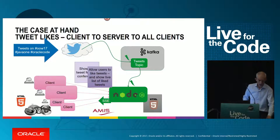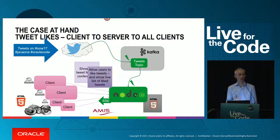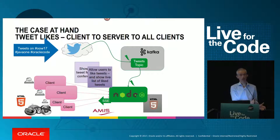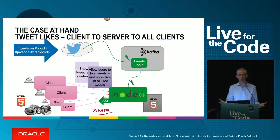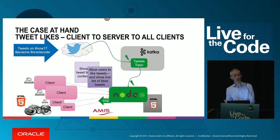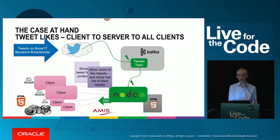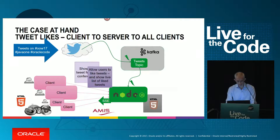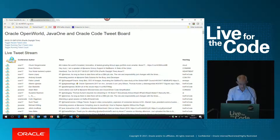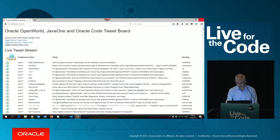But wait, there is more. I want users of this active UI to be able to like tweets, and when they do, all other users should be informed. This is just one example of any situation where actions in one client should be replicated to other clients — the typical example is a chat application, but there are many more: presence information, 'I've now started working on order such-and-such' — broadcast that information to all other clients.